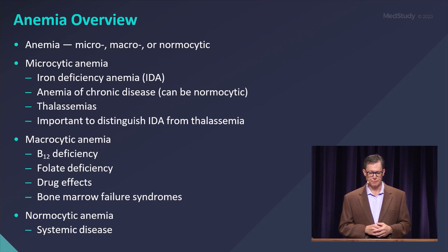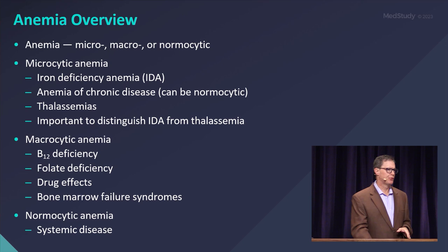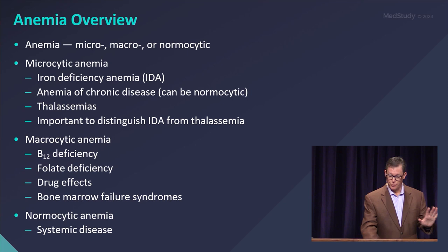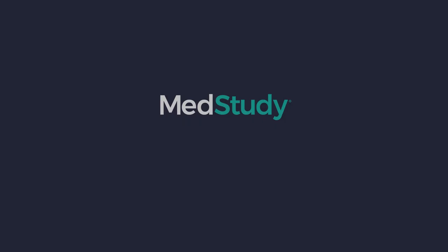And then finally, normocytic anemia — systemic disease, and things where you don't need a hematologist, such as trauma. If your patient is anemic because of trauma, you do not need a hematologist, but that will be a normocytic anemia.